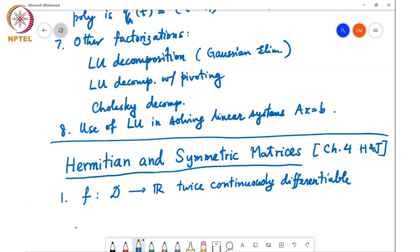We define the Hessian matrix for this f as a matrix H(x), which is an n×n matrix whose entries are H_ij(x), and each H_ij is the second partial derivative of f with respect to x_i and x_j.